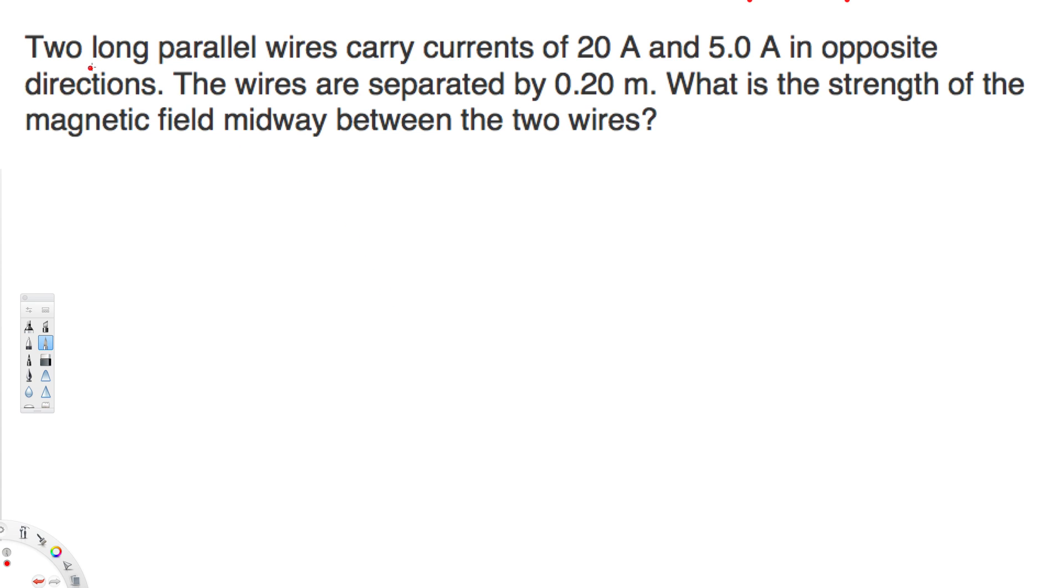Here they mentioned that this is long parallel wires, right? So here we are going to use the infinite wire equation. But before we do that, let's note down the given information. Here we have the currents: the first current, let's call this one I₁, that is equal to 20 amperes, and I₂ is equal to 5 amperes. And the separation is given by r = 0.2 meters.